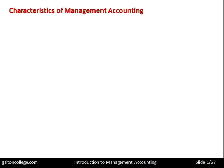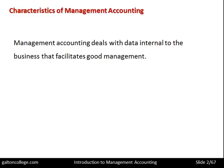In this class we want to talk about Management Accounting. We are going to start with the characteristics of Management Accounting. Management Accounting deals with data internal to the business that facilitates good management. We contrast immediately Management Accounting with Financial Accounting. Financial Accounting is looking outwards towards the external stakeholders of the business — the government, the shareholders and people interested in the financial performance of the business. Management Accounting by contrast is looking inwards, dealing with the processes and the financial relationships within the business to help management make more informed and better decisions.